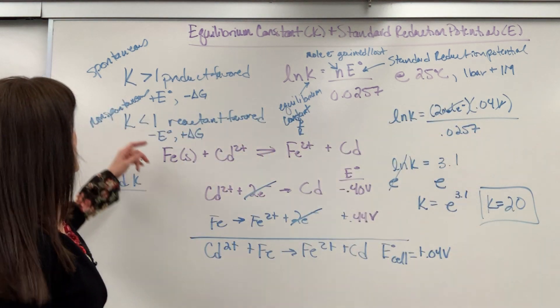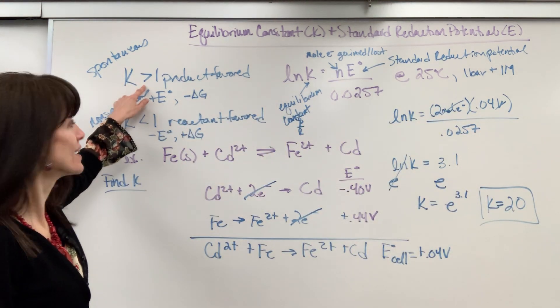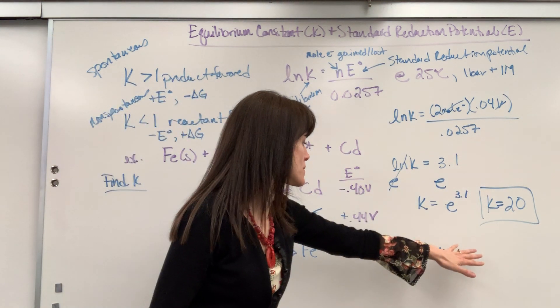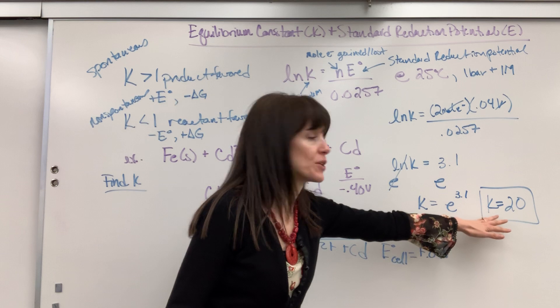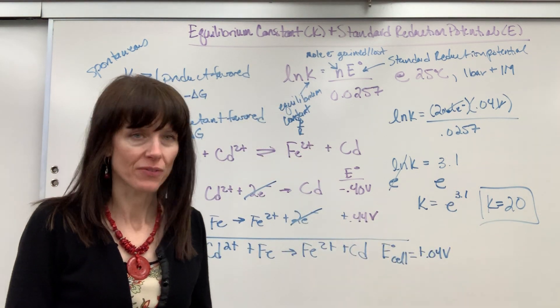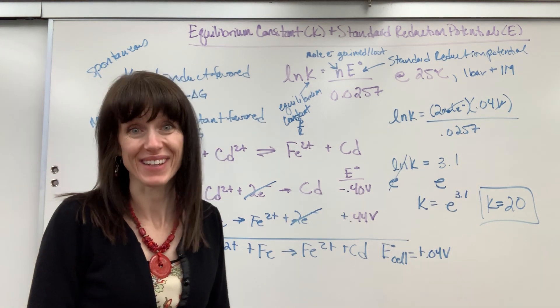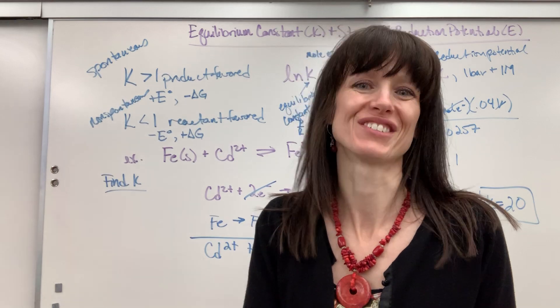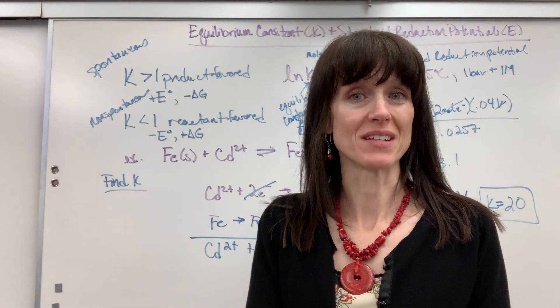Check it out. K is greater than 1. The E was positive. So all is confirmed by the numbers: that positive E, K greater than 1. It's going to be voltaic, product favored, spontaneous. Kind of cool. So there you have a really neat relationship between standard reduction potential and equilibrium constant.